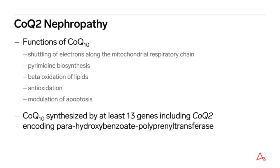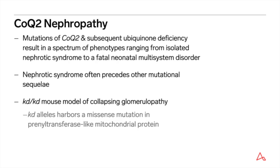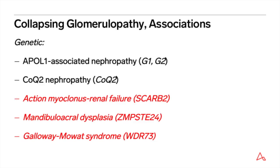CoQ10 is synthesized by at least 13 genes, including CoQ2, which encodes a polyprenyltransferase. Mutations of CoQ2 result in ubiquinone deficiency, which in turn leads to a spectrum of phenotypes ranging from isolated nephrotic syndrome to a fatal neonatal multisystem disorder. The link between CG and mitochondrial dysfunction is bolstered by the KD/KD mouse model of collapsing glomerulopathy, where the KD alleles harbor a missense mutation in a prenyltransferase-like mitochondrial protein. Interestingly, APOL1 risk alleles also cause mitochondrial dysfunction in certain cultured cells. Action myoclonus renal failure, mandibuloacral dysplasia, and Galloway-Mowat syndrome are rare autosomal recessive disorders caused by known genetic mutations, though the mechanisms leading to CG are unclear.